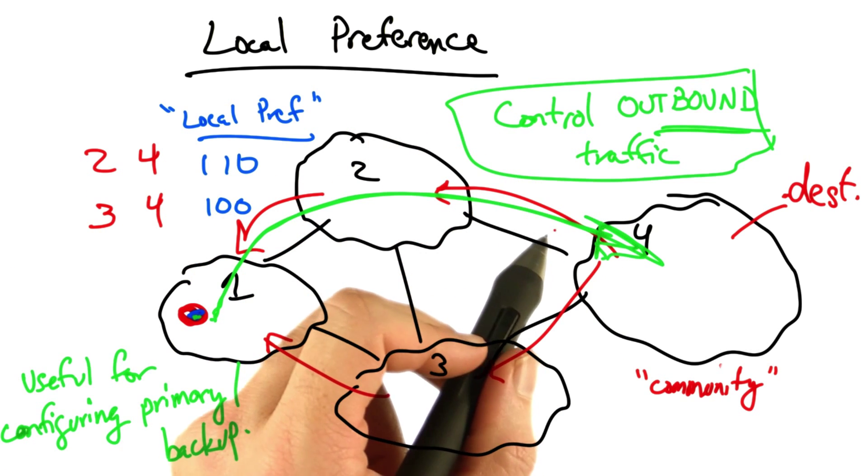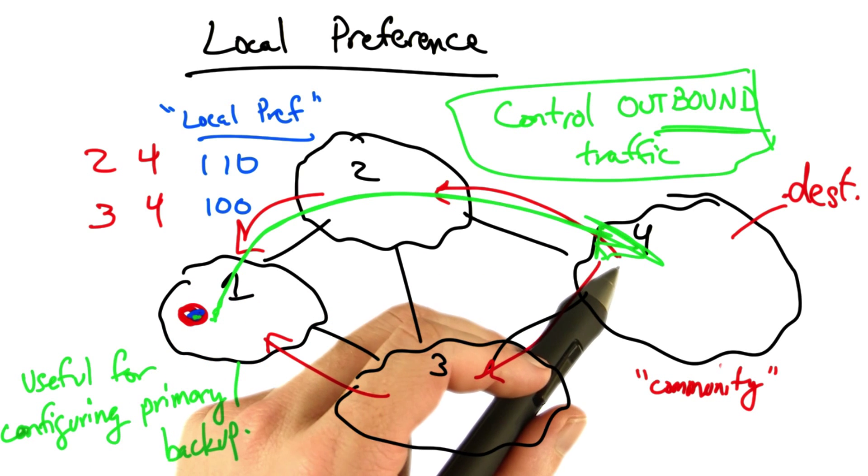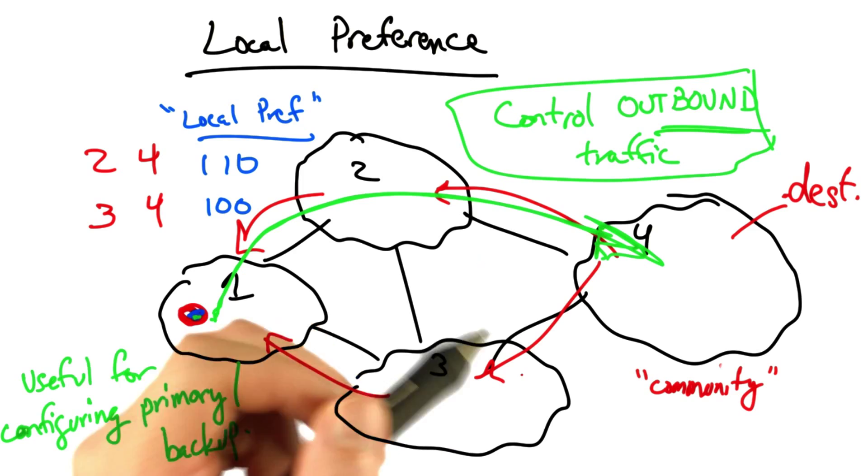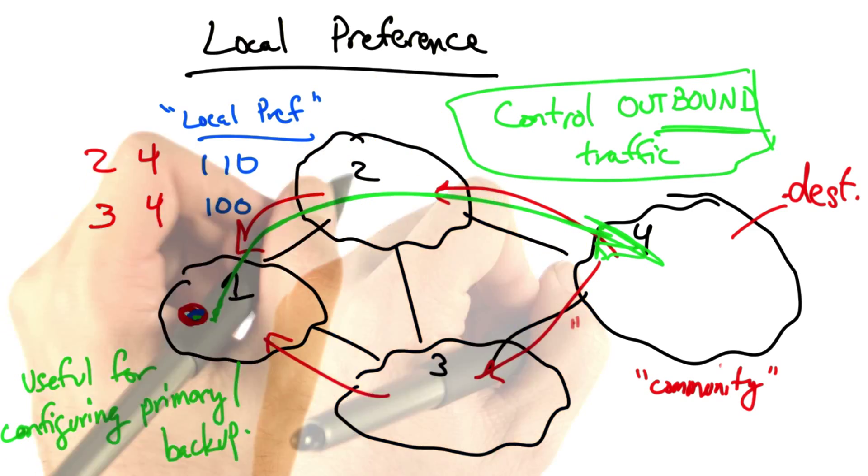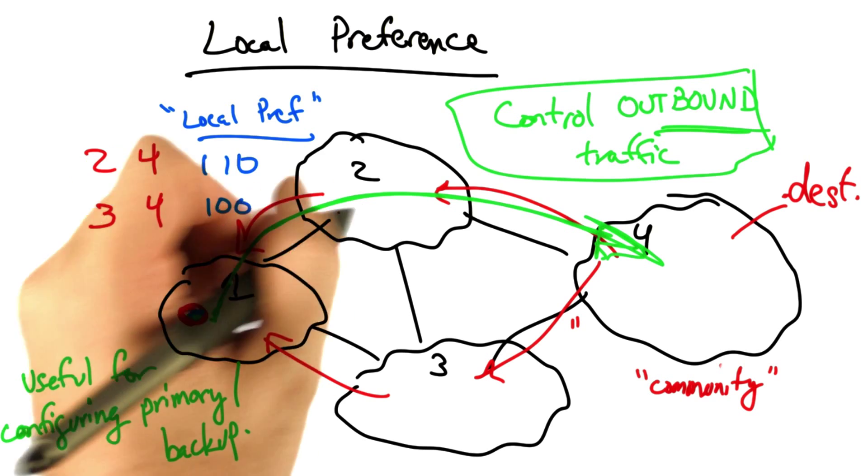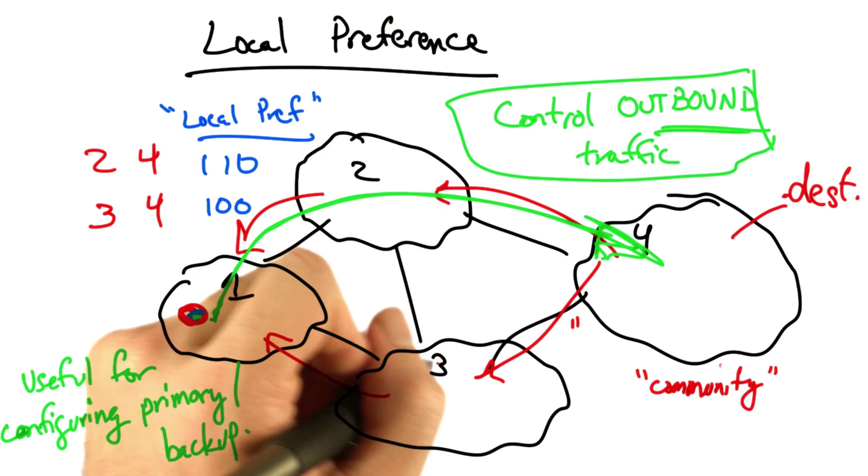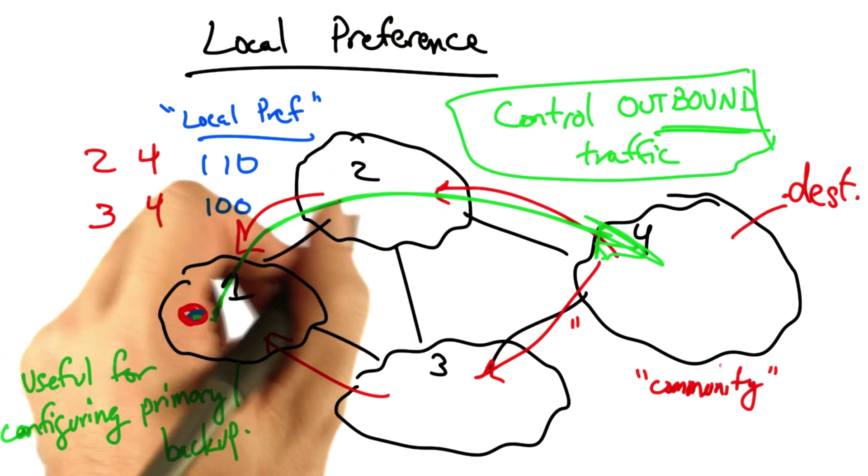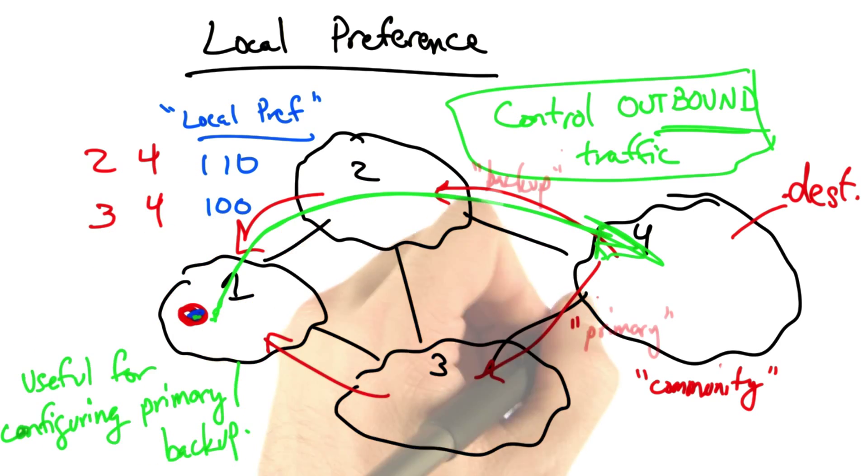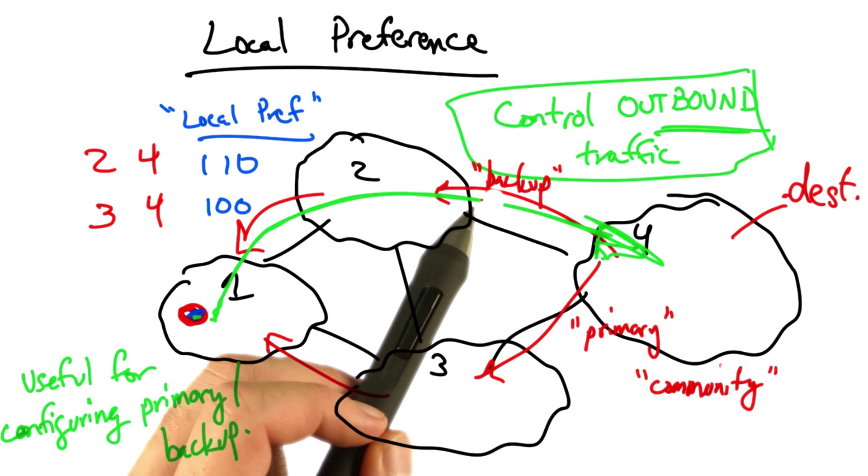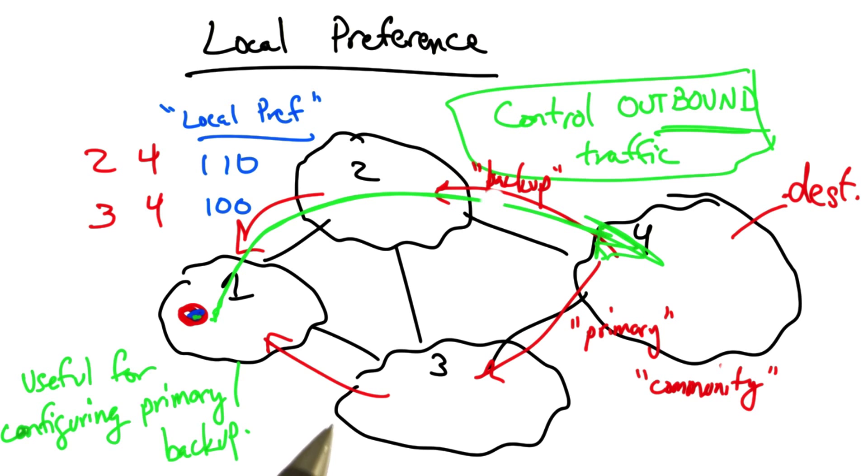So let's suppose that AS4 wanted to control inbound traffic by affecting how AS2 or AS3 set local preference. In this case, let's suppose that AS4 wanted traffic to arrive via AS3, its primary, rather than via AS2, its backup. In this case, AS4 might advertise its BGP routes with primary and backup communities.